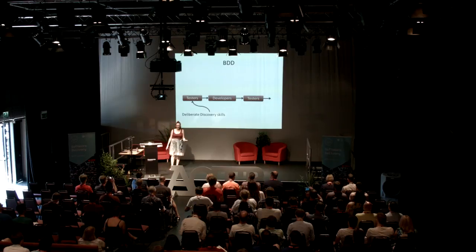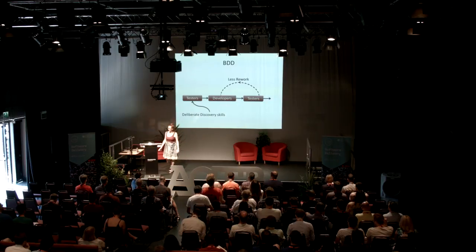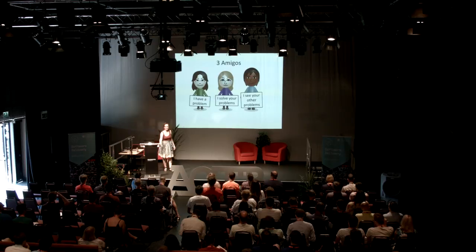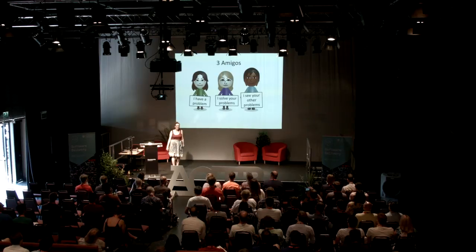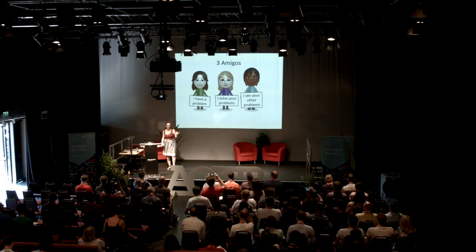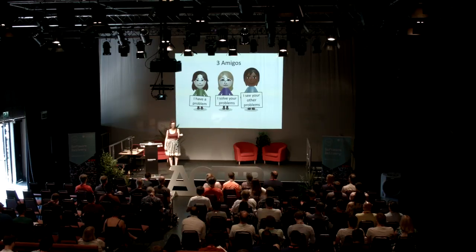There will still be stuff we miss — there's less rework, not no rework. That gives us the three amigos: we have somebody who has a problem — usually a product owner or SME who understands what they're looking for; we have somebody who's going to solve the problem — the dev, sometimes a dev pair, maybe a UI designer; and then we've got the evil people who see all the other problems you missed — the critical-thinking testers. Matt Wynn says it's three amigos where three is a number between three and seven.